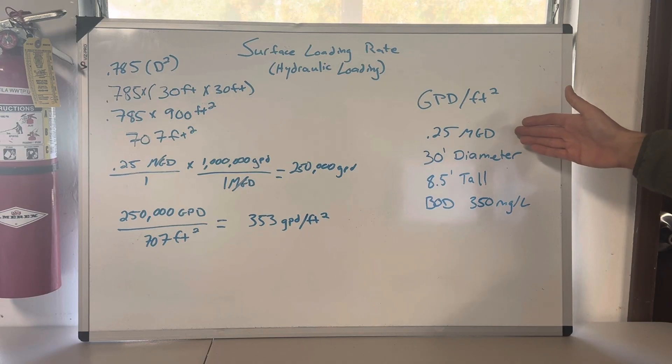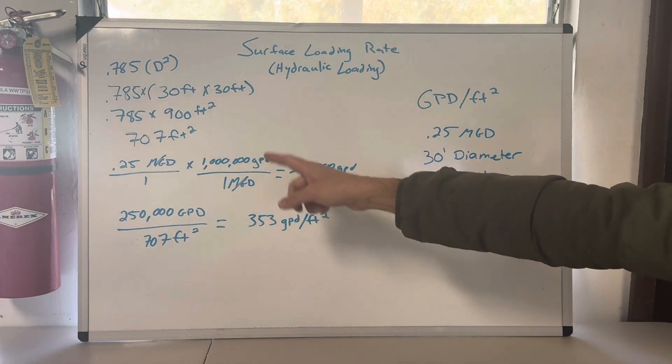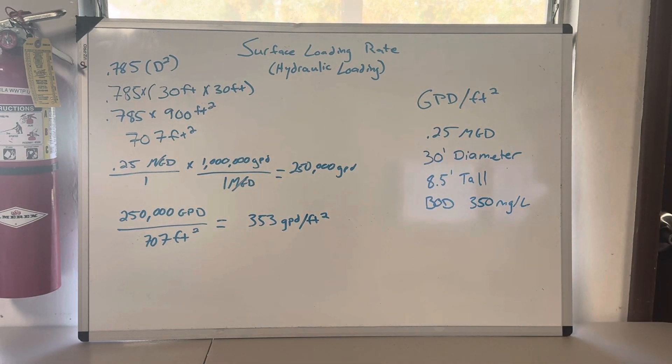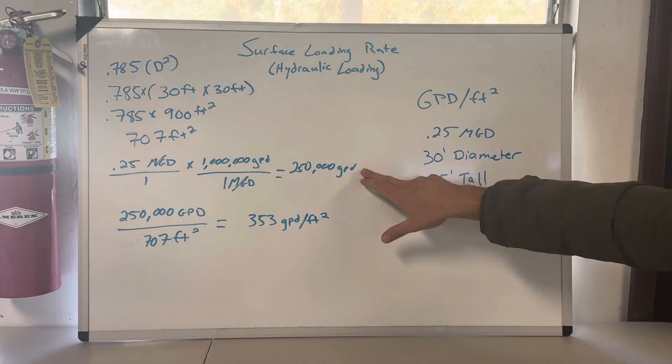Flow: we have million gallons a day, we need to convert it to gallons per day. So very simply, we multiply 0.25 by a million. So 0.25 MGD times 1 million gallons per day per 1 MGD. I wrote it like that so you can see me canceling out the MGDs and how we ended up with gallons per day. It's 250,000 gallons per day.